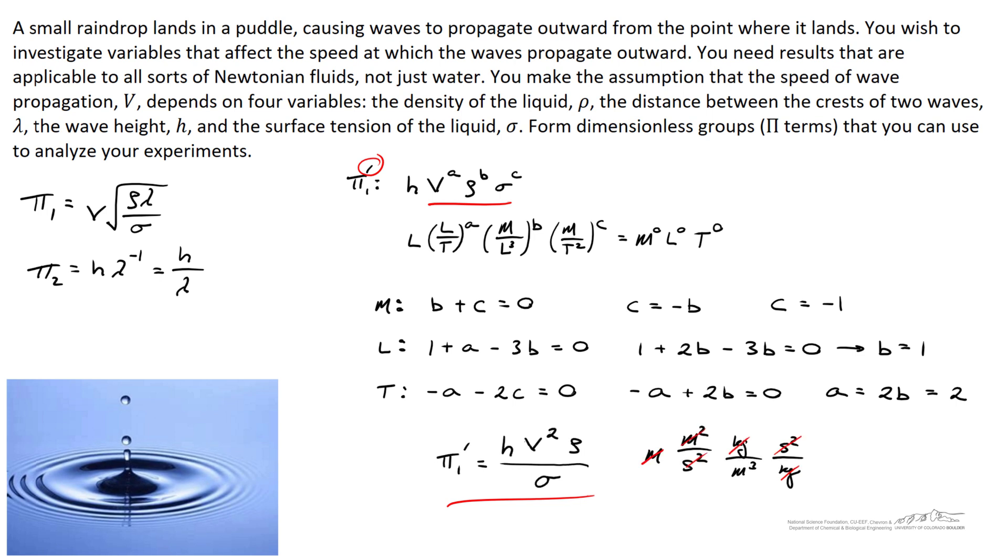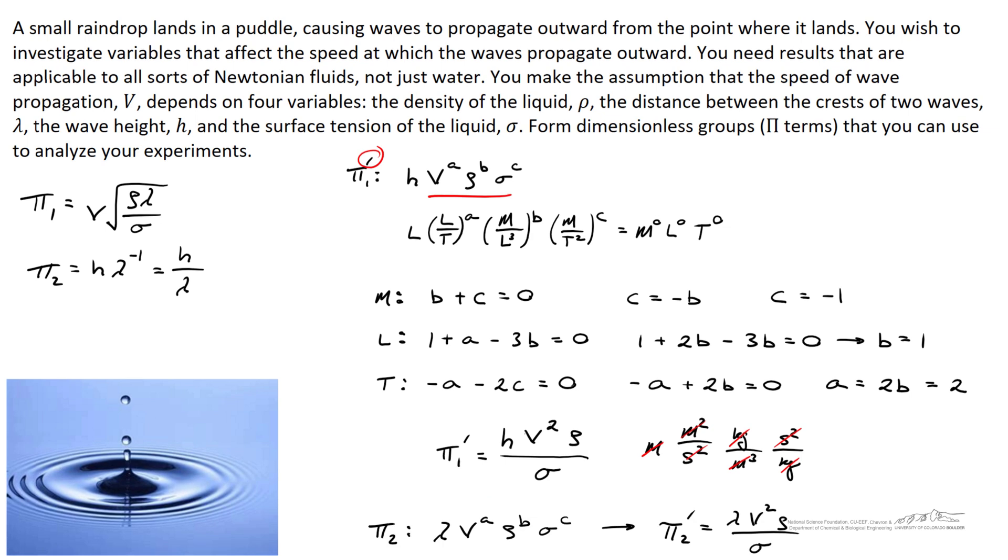So kilograms cancel out, seconds squared cancel out, and indeed this is a dimensionless quantity. And we can find the second pi term in this case. In the same way, we'll find that it's lambda v squared rho over sigma. Because h and lambda have the same dimensions, we know that this is a unitless quantity.